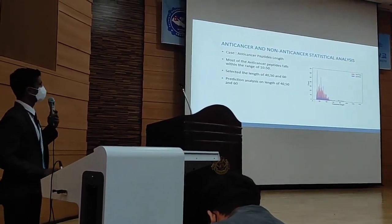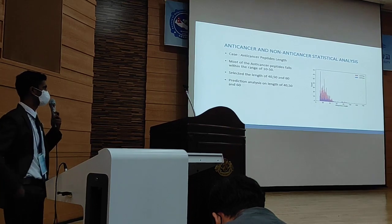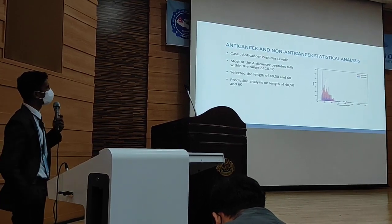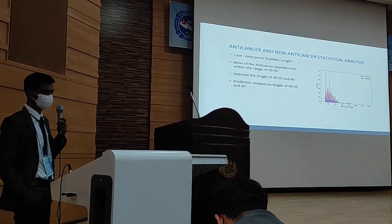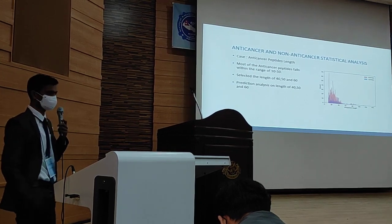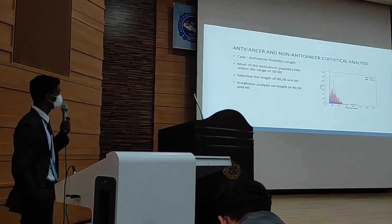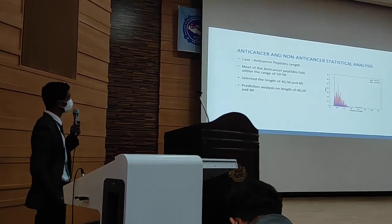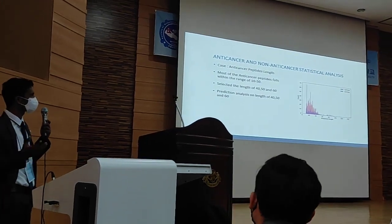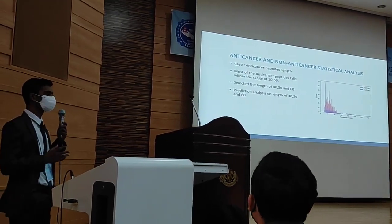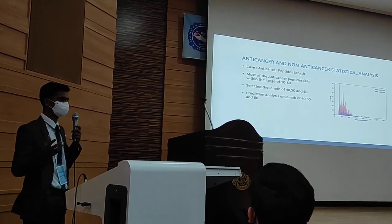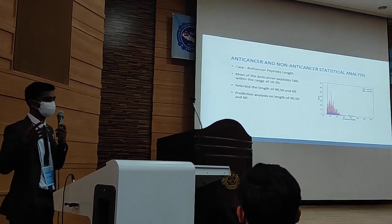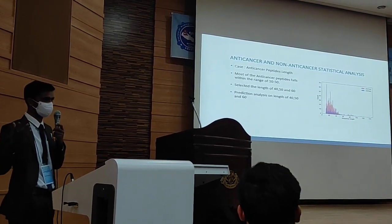We do some kinds of statistical analysis on two datasets: ACP740 and ACP240. ACP740 is the main dataset and ACP240 is the independent dataset. We see that most of the peptides fall within the range of 40, 50, and 60, so we take chunks of 40, 50, and 60 for the prediction analysis.